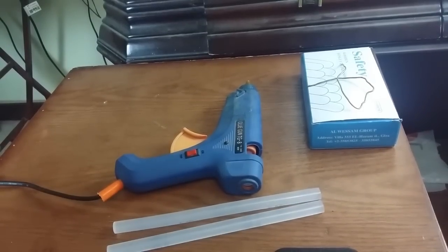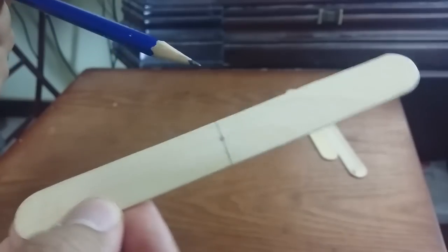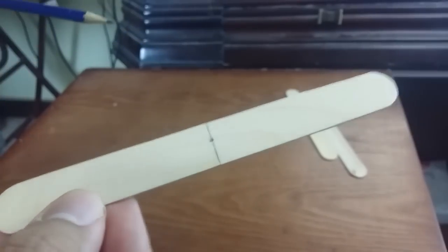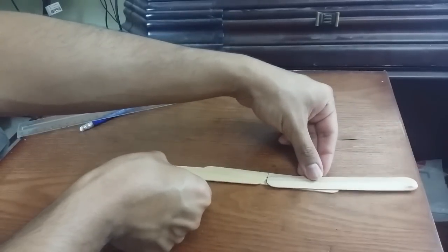Prepare your glue gun and now you are ready to build it. I will start with three sticks. You have to draw a line right in the middle in one of them. Now you have to glue the other sticks just like that.